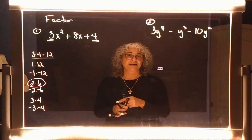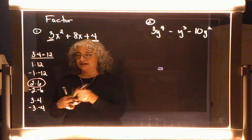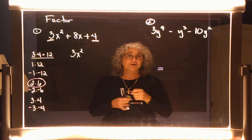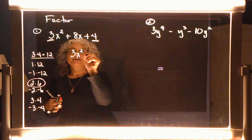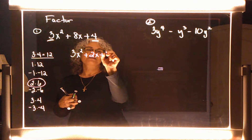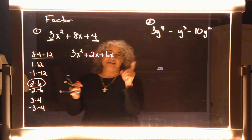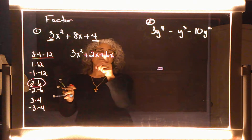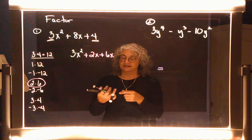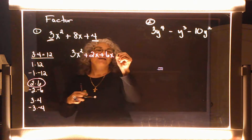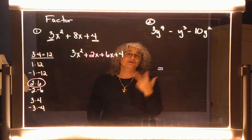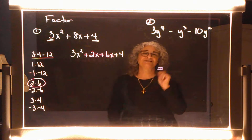Time to replace. I'm going to take 3x squared, and instead of the positive eight x, I'm going to put positive 2x and positive 6x — because a 2x and a 6x add to 8x. Both the two and the six need the x. Then plus the four. Three terms expanded to four terms — success!